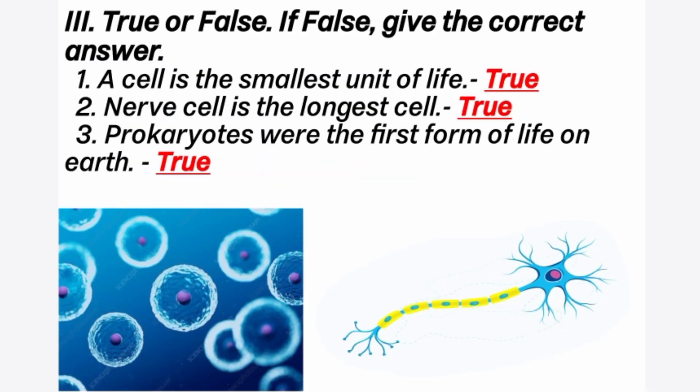True or false — if false, give the correct answer. First question: a cell is the smallest unit of life. Answer is true. All living organisms, both plants and animals, are made up of cells. Second question: the nerve cell is the longest cell. Answer is true. Third question: prokaryotes were the first form of life on earth. Answer is true, because bacteria were the first organisms to originate on earth.